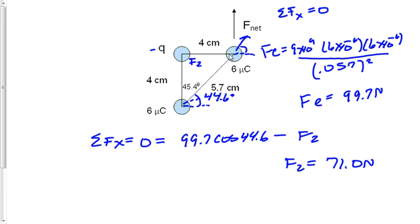So I know that there's a 71 newton force going along this direction here. So what's happening is this force 2 acting on this charge, the 6 microcoulomb charge, is pointing in this direction and has a value of 71 newtons. That will allow me to find the charge.